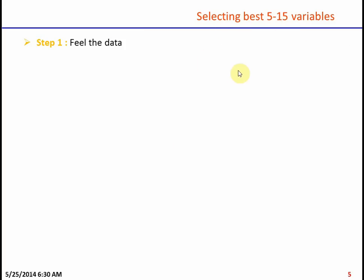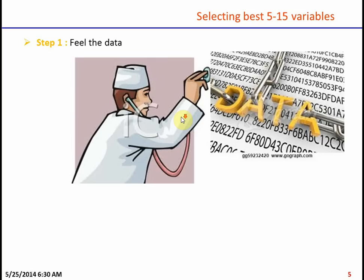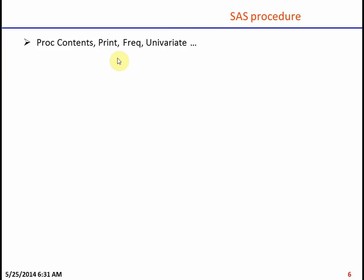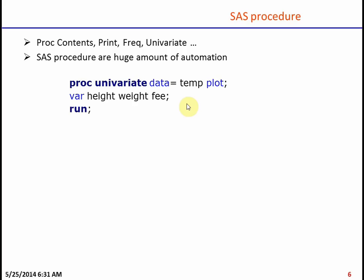Selecting 5 to 15 variables is itself a process. The first step is to get a feel of the data — just as a doctor gets a feel of a patient. As a modeler, you use statistical procedures like proc contents, proc print, proc freq, and proc univariate, which produce a lot of output. You need to specify just the dataset name and the variable names, and the procedure does the rest.